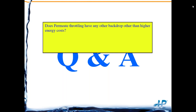Does permeate throttling have any other drawbacks other than higher energy costs? Other than the cost of the equipment itself, not really. If there's a lot of permeate back pressure — above 50 to 75 PSI — it may require changes to the permeate piping between the membrane and the valve. Also, unless the valve is automated, someone has to manually go out and change its position every time operating conditions change.